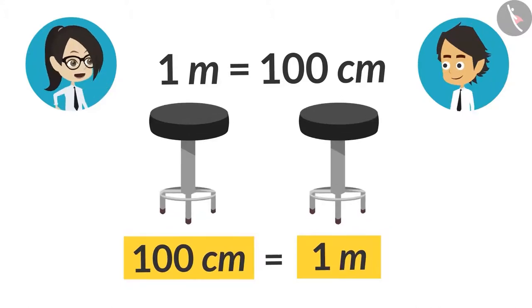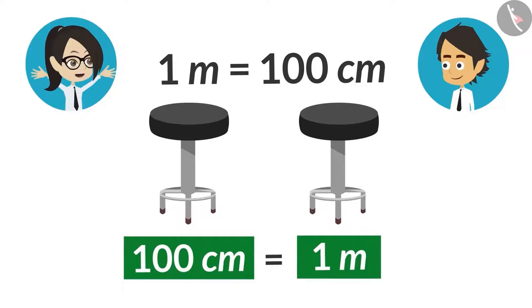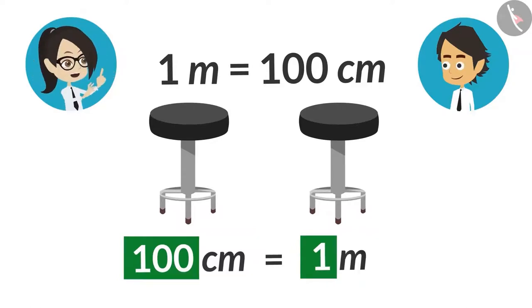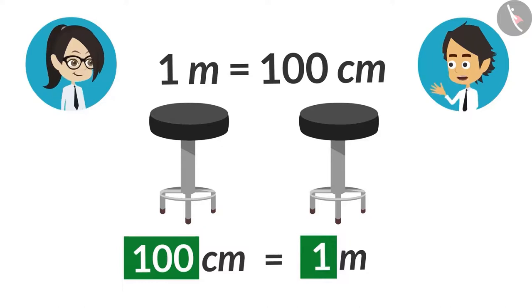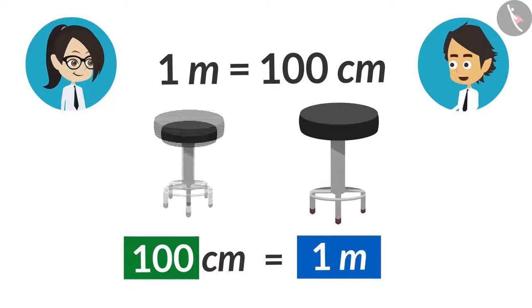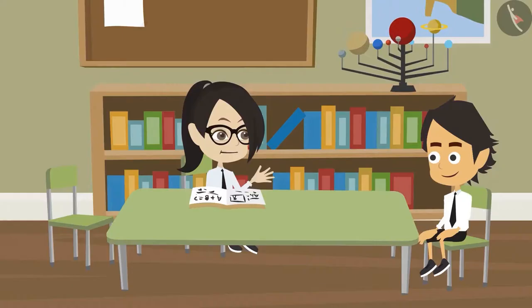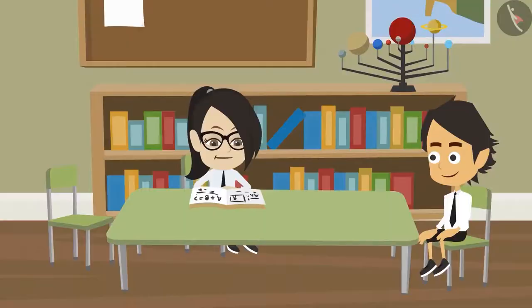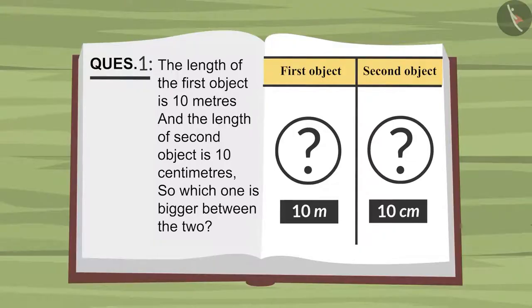Like here, the length of one object is written with different units of measurement. Therefore, there is a difference in their value too. And despite the value is less, the length of this object is equal to the other object. Yes. I understand it now. 10 meters is bigger than 10 centimeters.